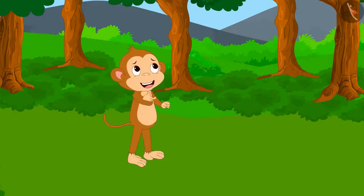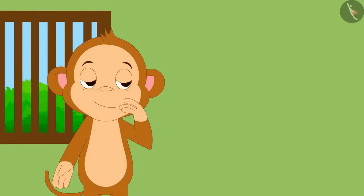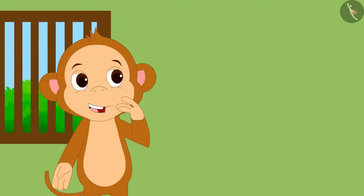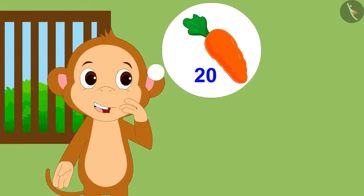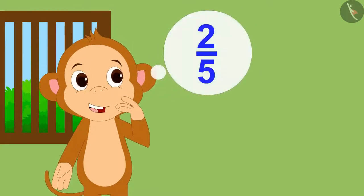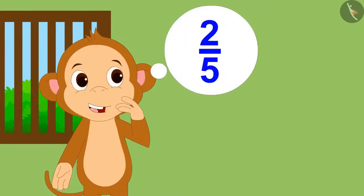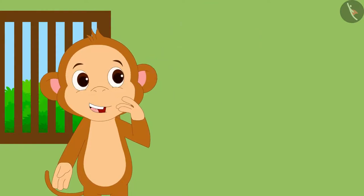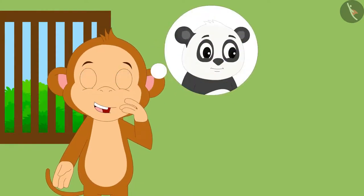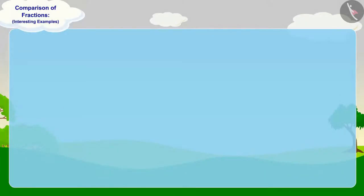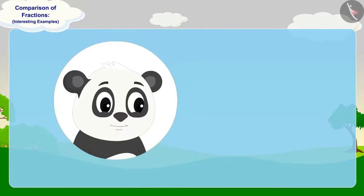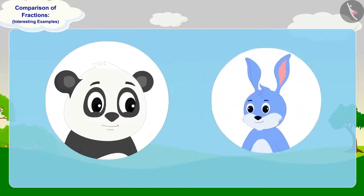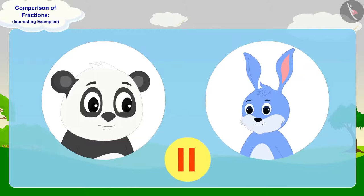Babban returned home happily. Now he is thinking that he will grow 20 carrots in his field. When those carrots are grown, he will give two-fifth part to Bunni and half to Golu. Children, can you tell how many carrots Bunni will get? Is that more than the number of carrots Golu gets? You can stop the video and find the answer.